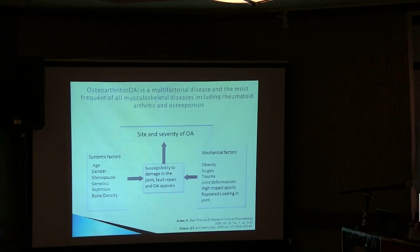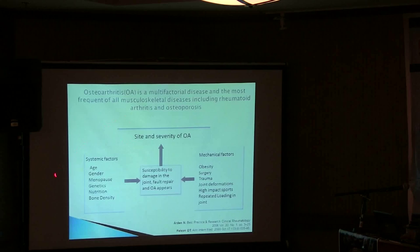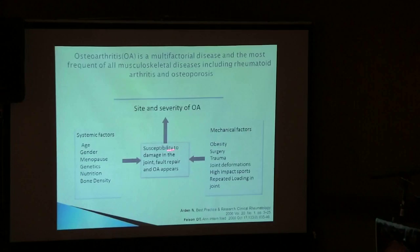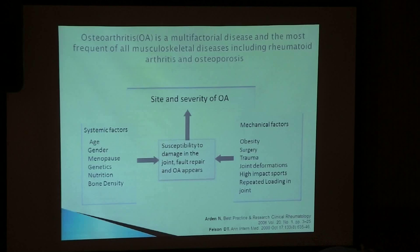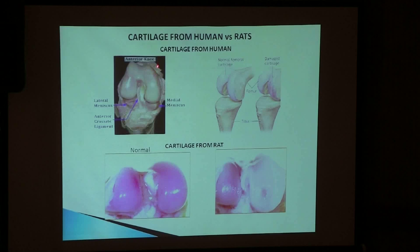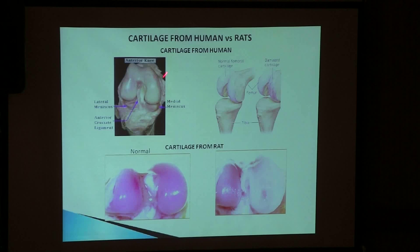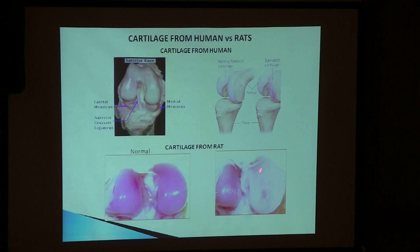As you all know, just as a reminder: the site and severity of osteoarthritis depends on systemic factors and mechanical factors that increase the susceptibility to damage, impaired repair, and the appearance of osteoarthritis. This was published by Arden and Felsen years ago. We have always studied human osteoarthritis in relation to our model — normal model, normal human cartilage, and osteoarthritis in human cartilage.